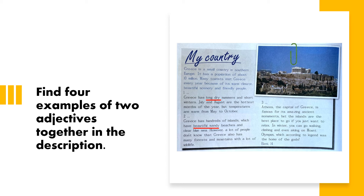Number two: 'beautiful sandy' — beautiful sandy beaches. Number three: 'clear blue' — clear blue sea. Number four: 'amazing ancient' — amazing ancient monuments.